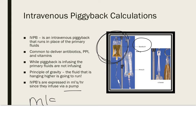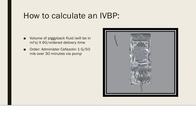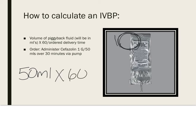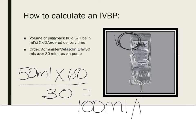Piggybacks are expressed in mLs per hour because they run on a pump. We need to know the actual volume of fluid in the bag — in this case it says 50 mLs. The formula is: volume times 60, divided by the delivery time. For example, a physician order says administer cefazolin 1 gram in 50 mLs over 30 minutes. You take 50 times 60 divided by 30, and set your pump to deliver this antibiotic at 100 mLs per hour.